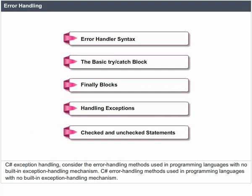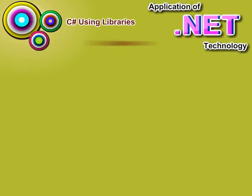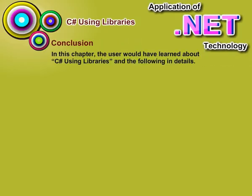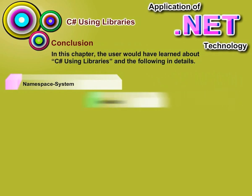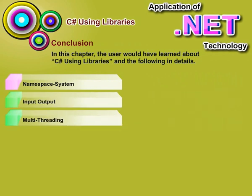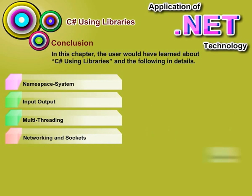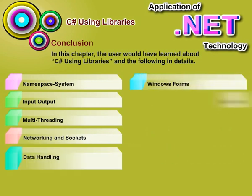Conclusion. In this chapter, the user would have learned about C-Sharp using libraries and the following in detail: Namespace System, Input-Output, Multithreading, Networking and Sockets, Data Handling, Windows Forms, C-Sharp in Web Application, and Error Handling.